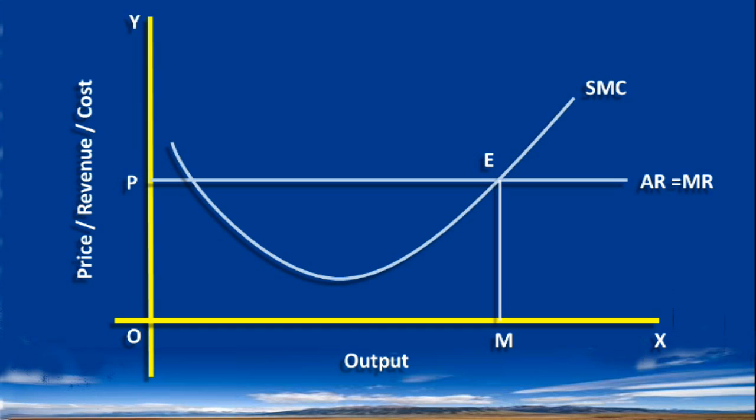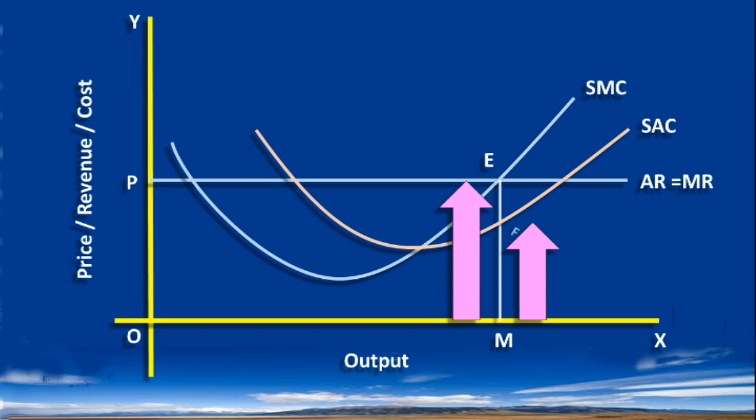SAC is the Short Run Average Cost curve. At output M, Average Revenue is ME. Average Cost is MF. Average Revenue is greater than Average Cost. Hence, the firm is earning Super Normal Profit.